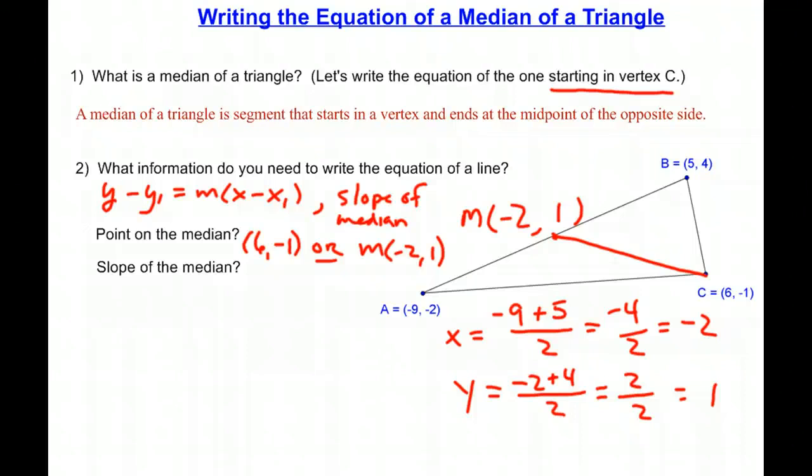So looking at M and C, I'm going to go 1 minus negative 1, that's my slope, all over negative 2 minus 6. 1 minus negative 1 over negative 2 minus 6. That ends up equaling 2 over negative 8, which if I want I can reduce to negative 1 fourth.